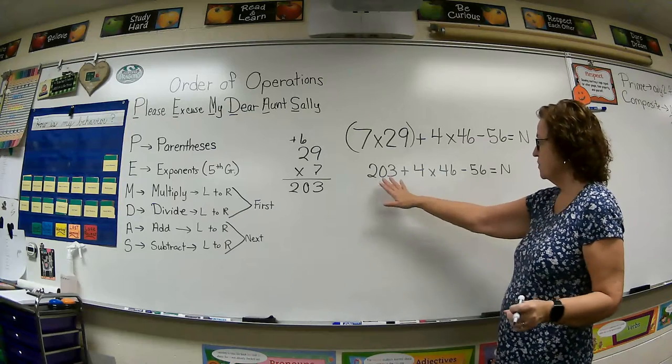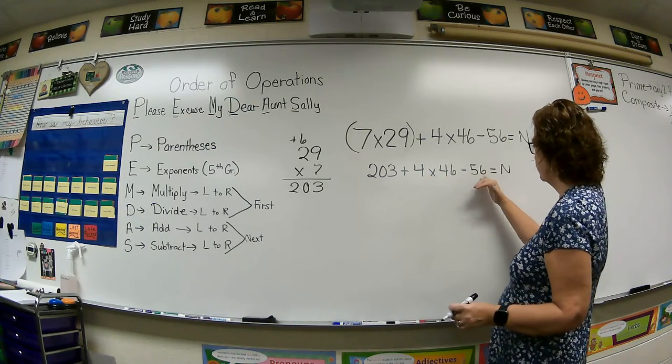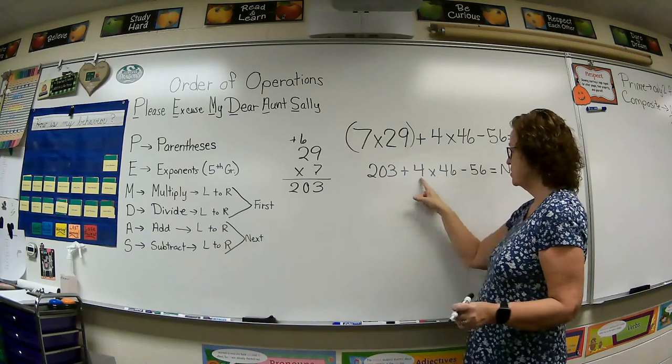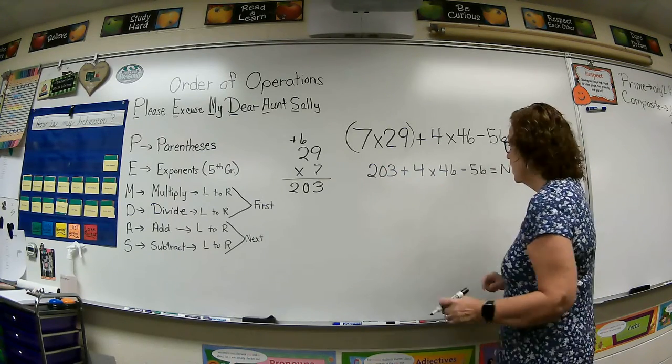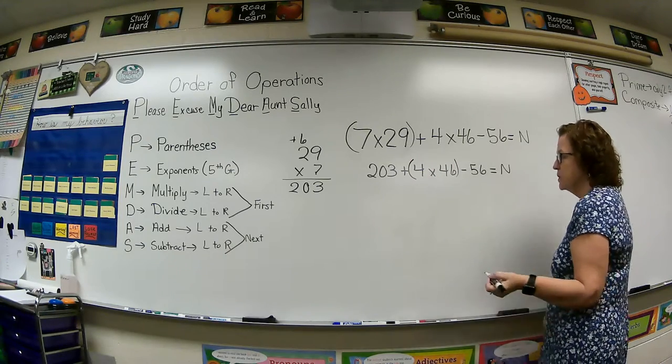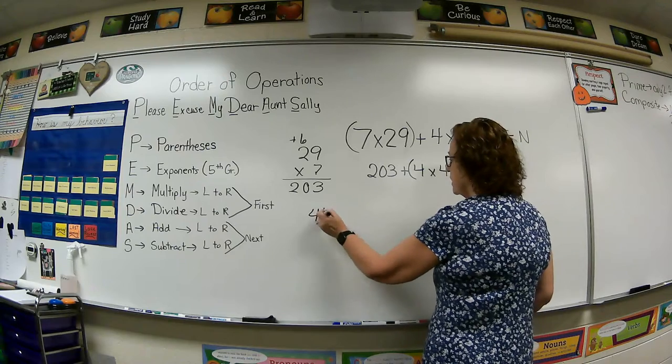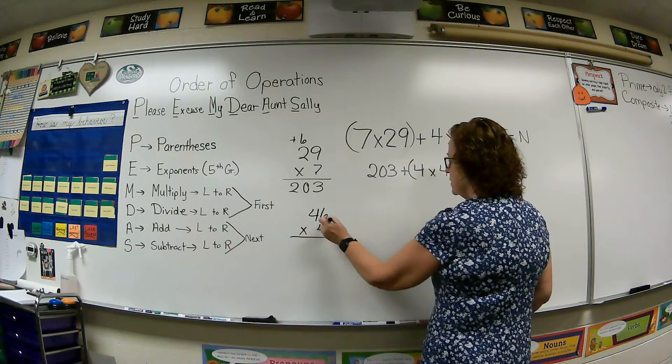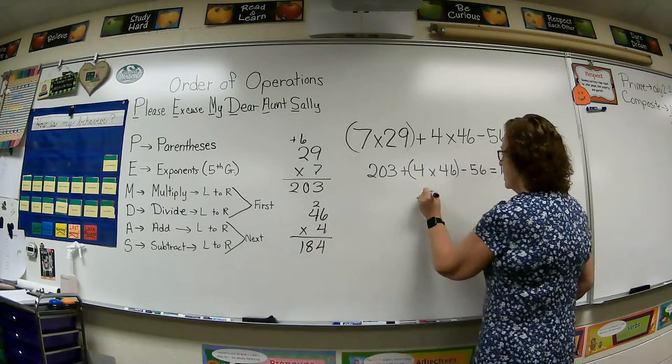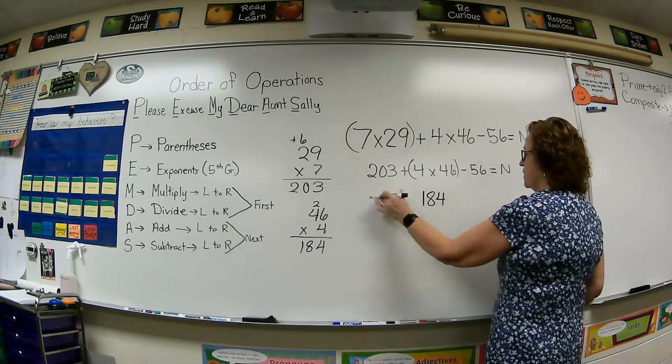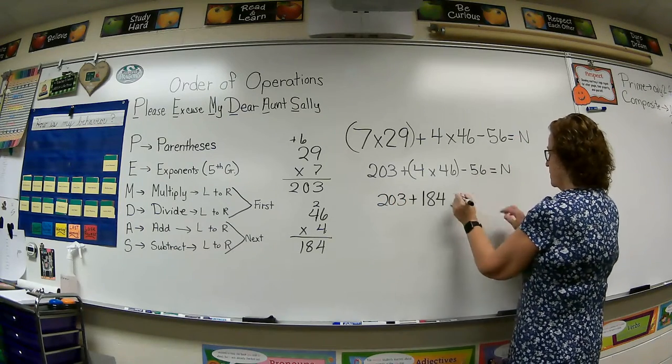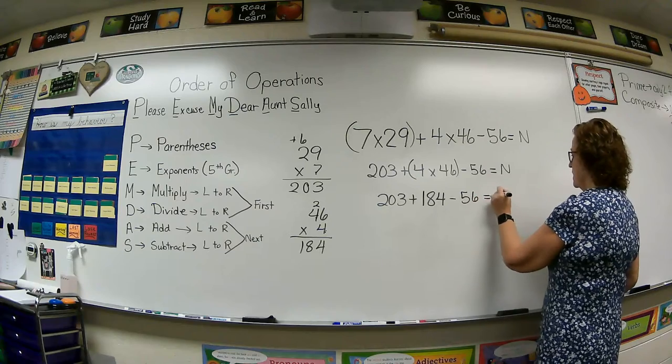So 203 plus 4 times 46 minus 56 equals N. I do not do my adding first. There's actually another multiplication calculation to be done. So let's go in here, and let's isolate that with our parentheses, and do 4 times 46. 4 times 6 is 24. 4 times 4 is 16 plus 2 is 18. So put 184. Bring this part down. 203 plus 184. And then bring this part down. Minus 56 equals N.